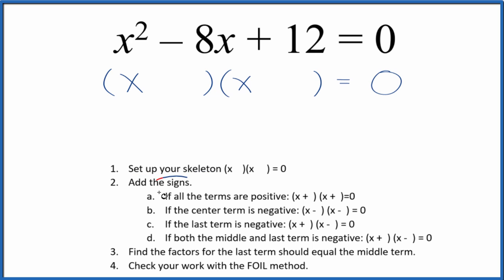Then we can add the signs. We have this negative sign in the middle. So if the center term is negative, we're gonna have x minus and then x minus in our skeleton, like this.